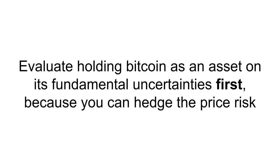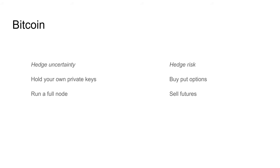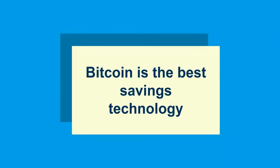You should evaluate Bitcoin or holding Bitcoin as an asset on its fundamental uncertainties first, because you can hedge the price risk away anyway. It doesn't really matter what your view is on the price risk — you could be bearish on the price risk but be bullish on the fundamentals of the system. You could build a portfolio where you own a large amount of physical Bitcoin, but also hedge risk by buying put options or selling futures. That way you've constructed a portfolio that mitigates the risk of the downside exchange rate while also benefiting from minimizing the uncertainties associated with the rest of the monetary system. So in conclusion, Bitcoin is the best savings technology, and I will argue with you unhesitatingly if you disagree. I hope you enjoyed this presentation — let's talk about it in the speaker sessions.